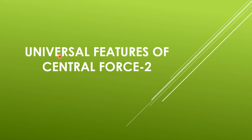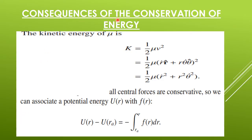In this video, we will be studying about some other features of central force. What are the consequences of conservation of energy? The kinetic energy of a particle is half mv². Here we have a reduced mass mu, so the kinetic energy of mass mu is half mu v². V has two components: one in the radial direction and another in the tangential direction. We substitute it as r-dot r-hat plus r*theta-dot theta-hat, and on expanding, the kinetic energy becomes half mu times (r-dot² + r²*theta-dot²).